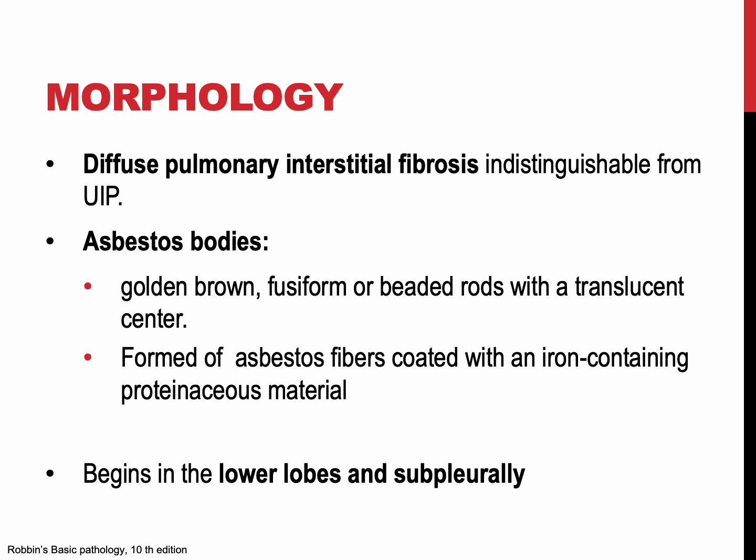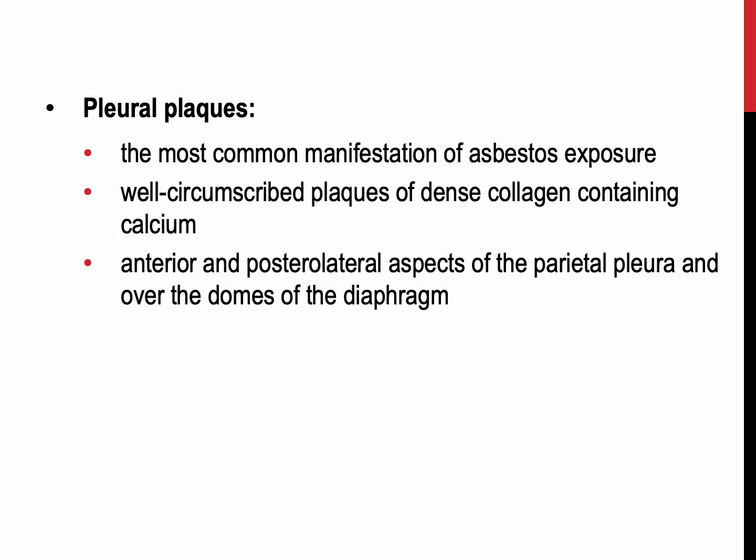Asbestosis begins in the lower lobes and subpleurally, spreading to the middle and upper lobes as fibrosis progresses. Pleural plaques are the most common manifestation of asbestos exposure. They are characterized by well-circumscribed plaques of dense collagen, often containing calcium, developing most frequently on the anterior and posterior lateral aspects of the parietal pleura and over the dome of the diaphragm.